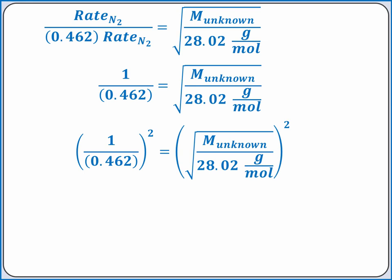We end up with what's inside the square root on the right side of the equation, which is the molar mass of the unknown divided by 28.02 grams per mole. On the left side of the equation, we get 4.68 when we square 1 divided by 0.462.